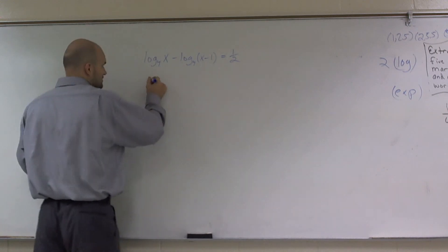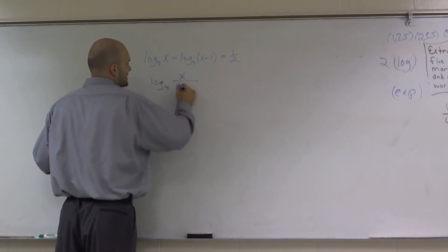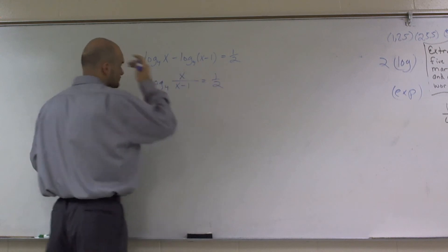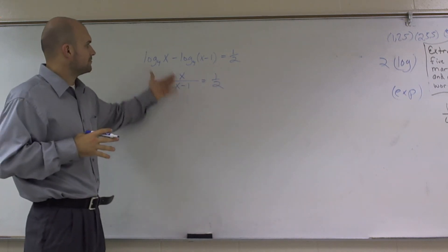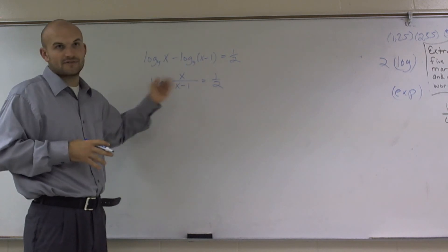So I'm going to use the property logarithm to condense this. So I'm going to say log base 4 of x divided by x minus 1 is equal to 1 half. All right? And remember, whenever you subtract two logarithms, you can rewrite that as a division problem.